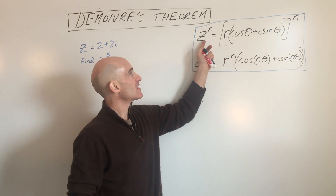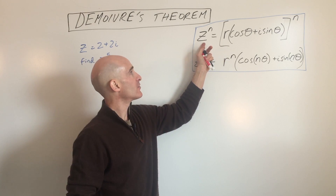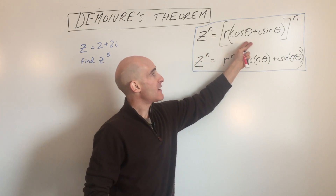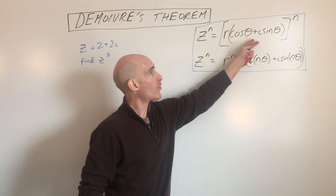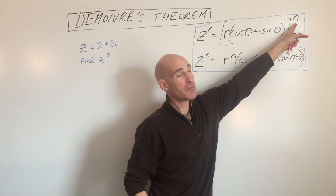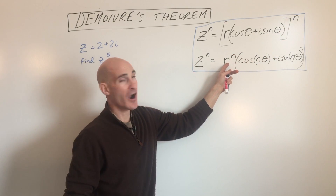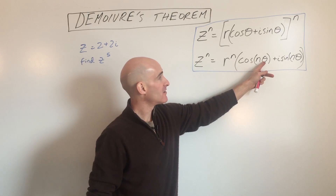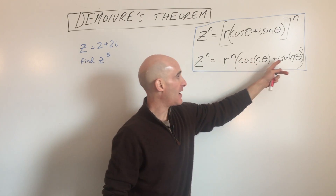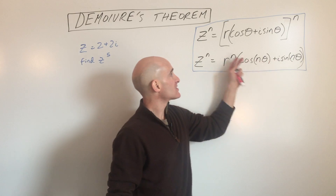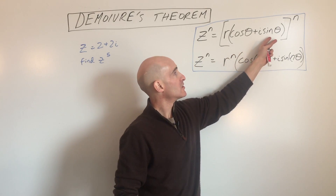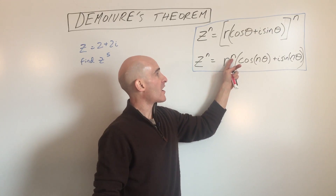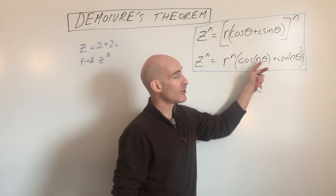De Moivre's Theorem tells us that if we want to raise a complex number to a power, we put the complex number into trigonometric form, and then to raise it to the nth power, we raise the r value to the nth power and multiply the angle by n.